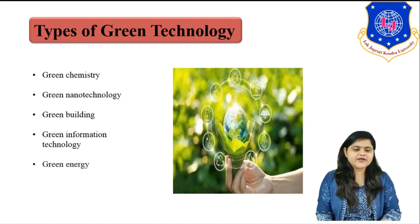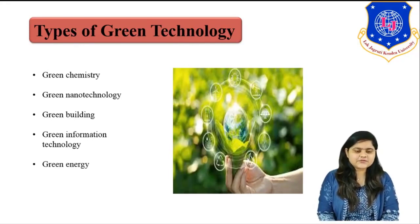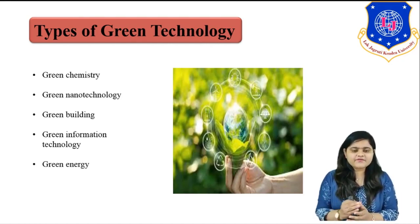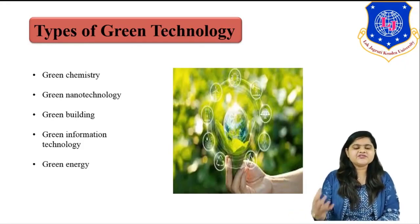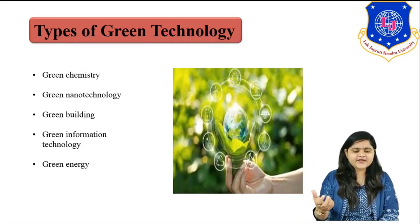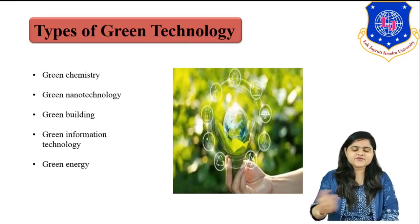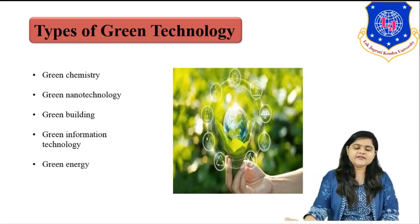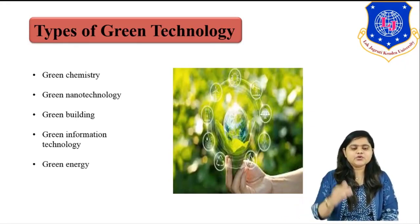The last type of green technology is green energy, meaning using natural and renewable resources as much as possible. Examples include solar energy, wind energy, geothermal energy, and biomass. Green energy does not simply mean using renewable resources — it means using them while eliminating environmental impact. For instance, burning fossil fuels to generate electricity is not green energy because it generates air pollution. Green energy means using renewable sources by eliminating or reducing the load on the environment.